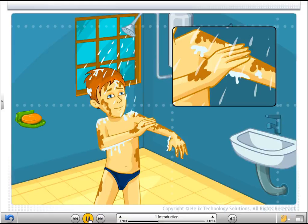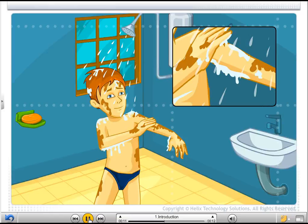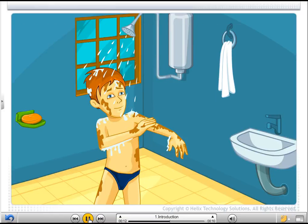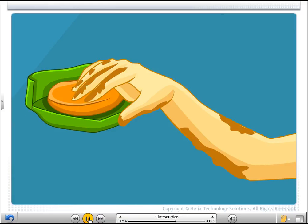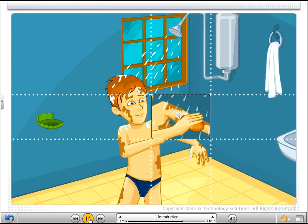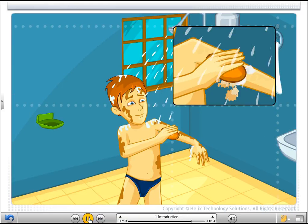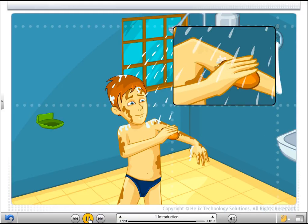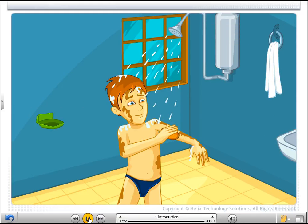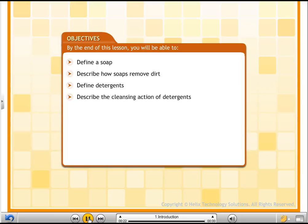It is difficult to remove dirt just by washing it with water, as dirt contains an oily component. That is why we use soap and detergent to clean substances. This lesson is about the composition of soaps and detergents and their cleansing action.